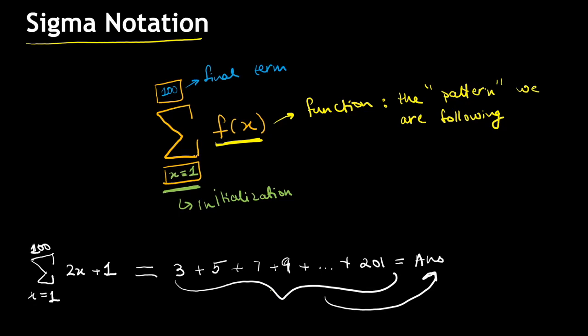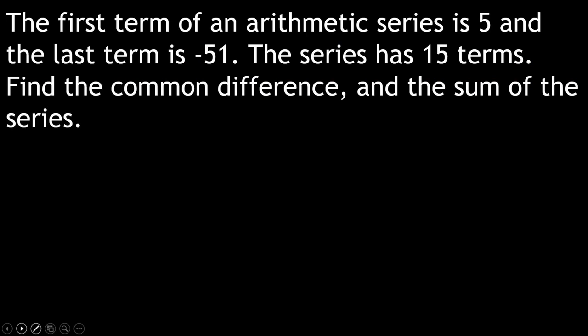The sigma function is even present in your calculator, which is a really nice way to add things up — especially in your paper. Now let's look at Example 1. The first term of an arithmetic series is 5, the last term is minus 51, and the series has 15 terms. Find the common difference and the sum of the series.